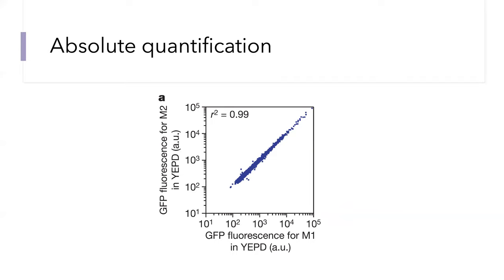Everything discussed so far was about relative quantification — how the relative amount of a peptide changes across different samples, from which we can infer how the corresponding protein abundance changes. But in some cases we would like to quantify the protein in absolute terms: in number of moles or number of molecules present. Here we can see one attempt at such quantification of proteins in budding yeast using not mass spectrometry but fluorescent proteins — green fluorescent protein fused to different open reading frames in yeast and measured by flow cytometry. The comparison of two biological replicates provides estimates for the absolute abundance of these different proteins in budding yeast.